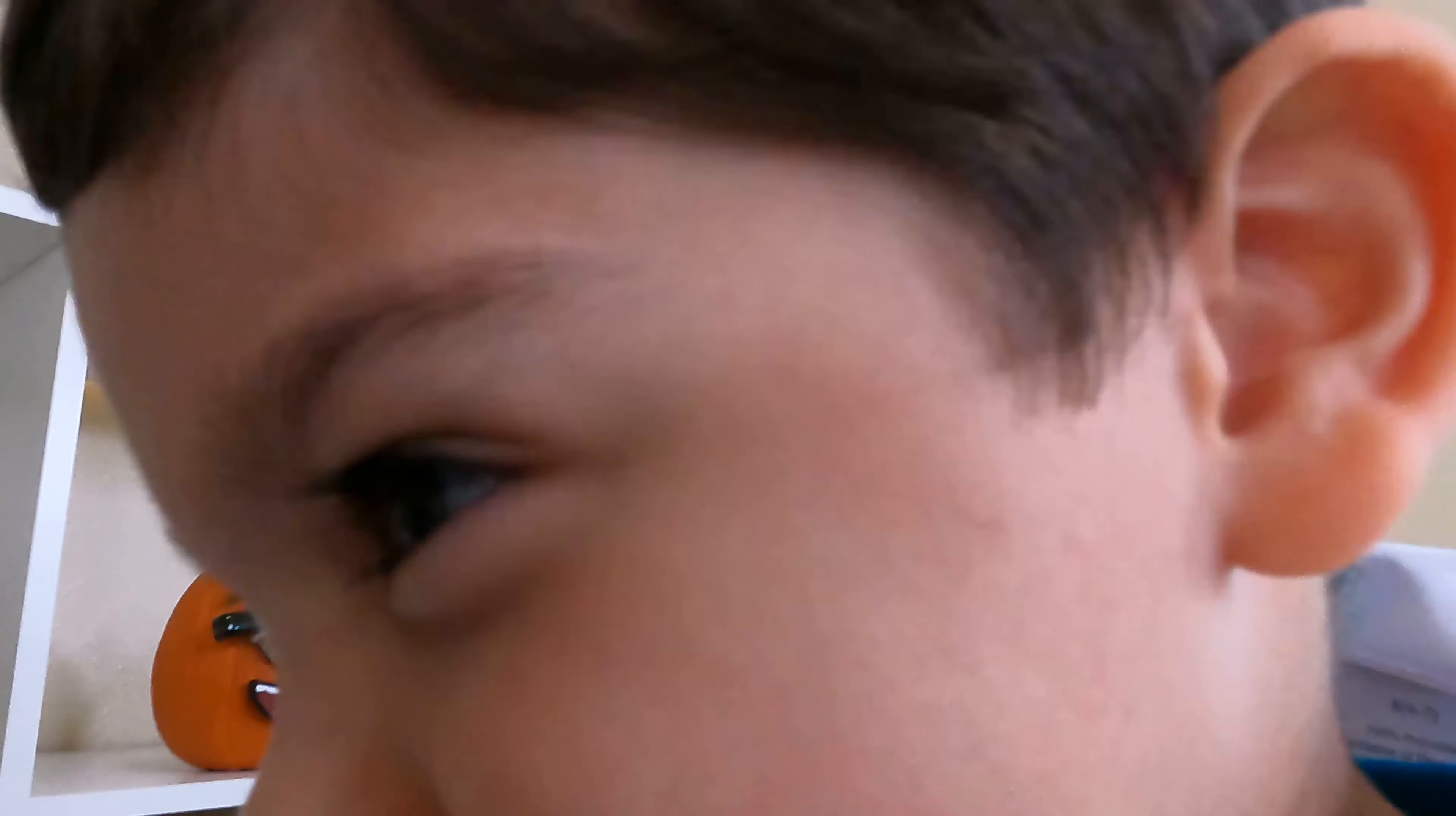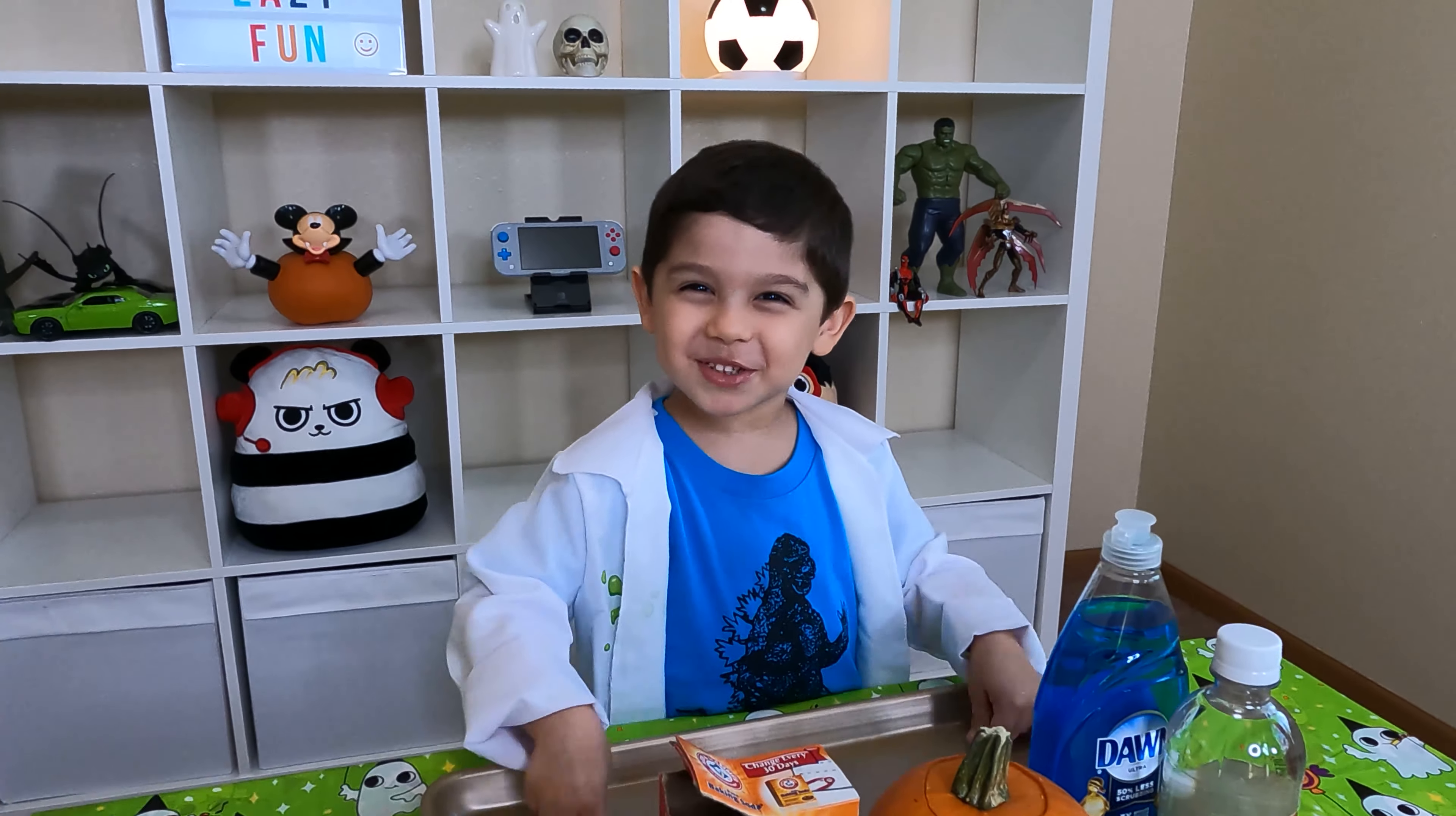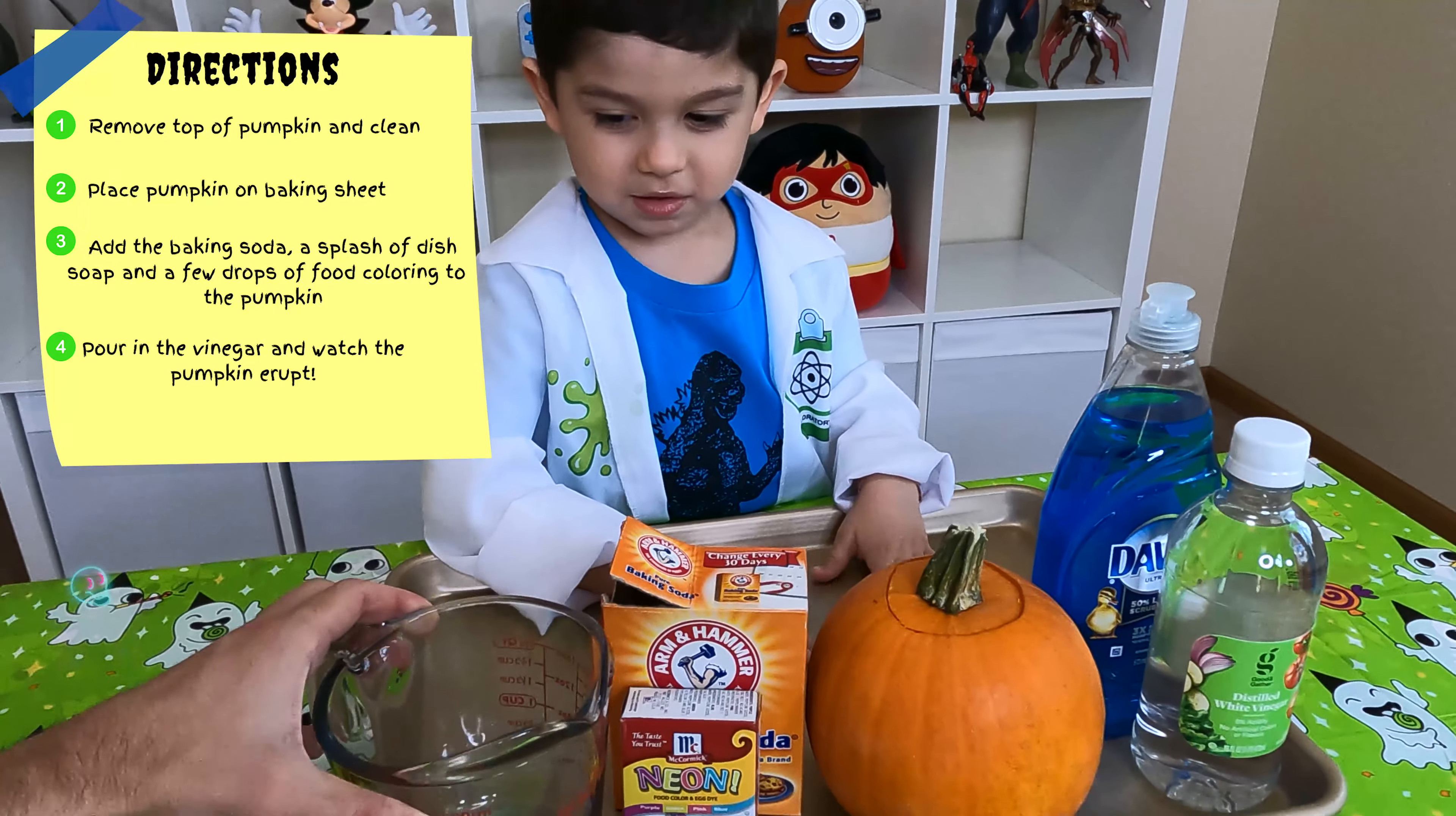Evil scientist! Oh no, he's the evil mad scientist, he's trying to attack me. Super Easy Fun! Welcome to Super Easy Fun. First thing we're going to do is exploding pumpkin. Alright, so everything we're going to need is a measuring cup.